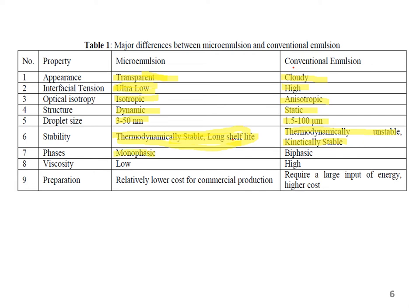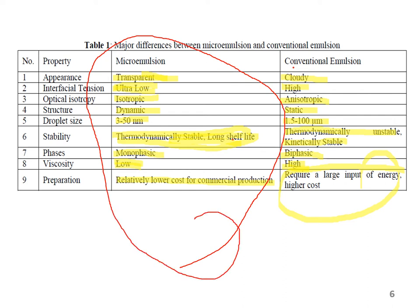For all practical purposes, microemulsions are considered to be a monophasic system, while the conventional emulsion is a biphasic system. The viscosity of microemulsions is much lower than that of conventional emulsions. And because no energy requirement is there for manufacture of microemulsions, the cost of commercial production works out to be relatively lower as compared to the cost of manufacture of conventional emulsions. Thus, overall, we can see that there are several advantages to the use of microemulsions as carrier vehicles for drugs exhibiting poor solubility or other bioavailability problems.